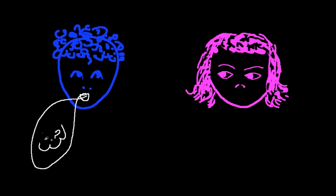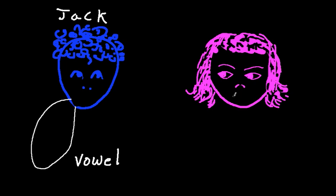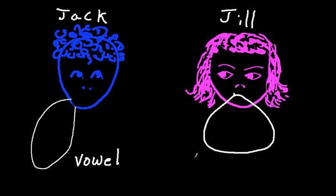Let's see if we can figure out what the parts of spoken words are. I think we need to get some help from our friends here. I'm going to ask our friend Jack — this is Jack — if he will say five vowel sounds. And then I'm going to ask Jill — this is Jill — if she will say five consonant sounds.